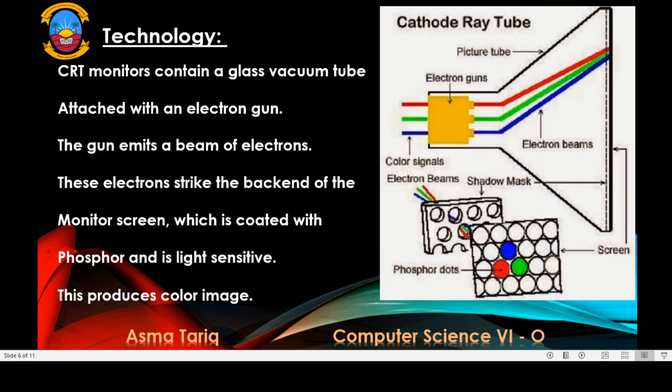The technology used in CRT monitors: CRT monitors contain a glass vacuum tube attached with an electron gun. The gun emits a beam of electrons. These electrons strike the back end of the monitor screen, which is coated with phosphor and is light sensitive. This produces a color image.